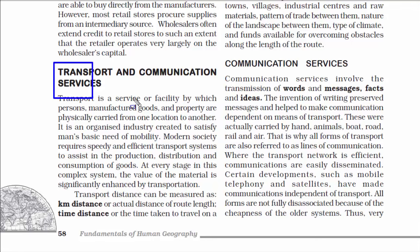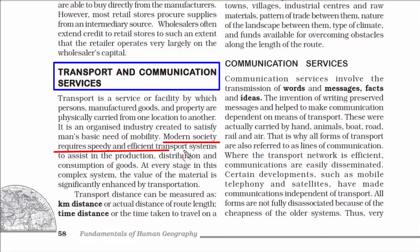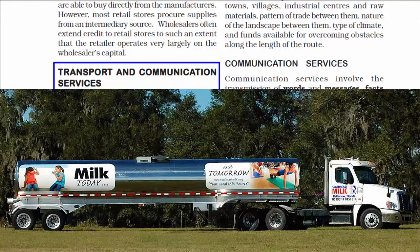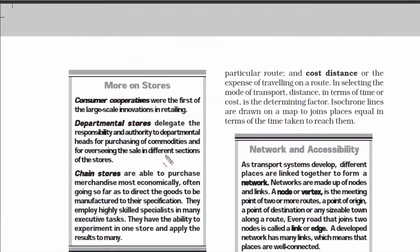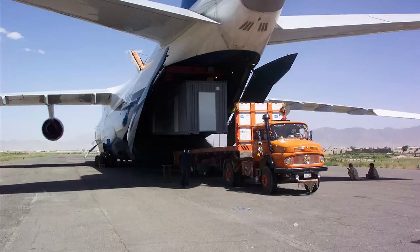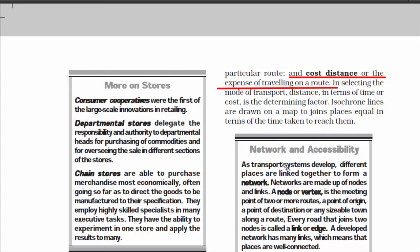We now move on to transport and communication services. Modern society requires a speedy and efficient transport system to assist in the production, distribution, and consumption of goods. There are many perishable goods that need to be delivered on time — otherwise there is a huge loss. Profit and loss are very much associated with transport. The longer the distance, the higher the cost, and the mode of transportation also determines the cost. An aeroplane is more expensive than a train or ship because of its delivery time.